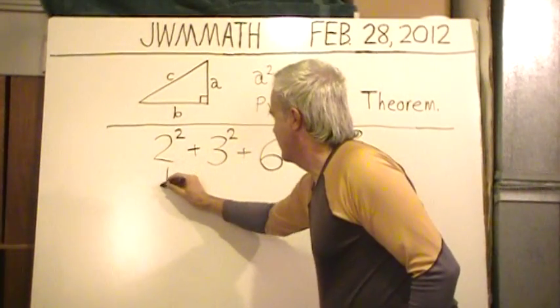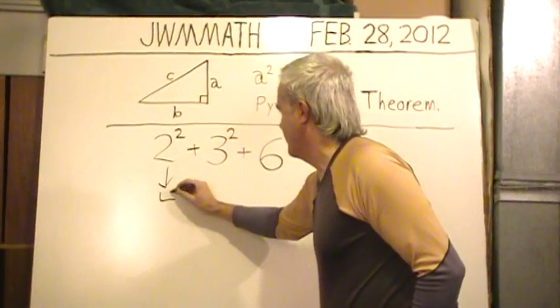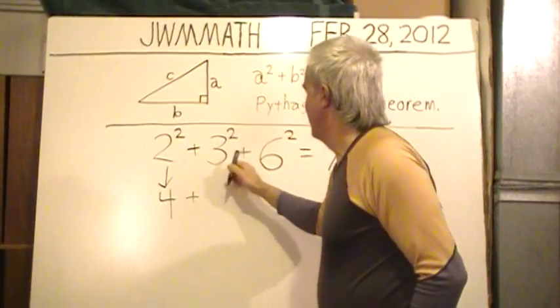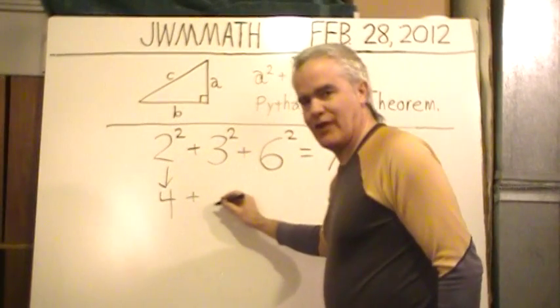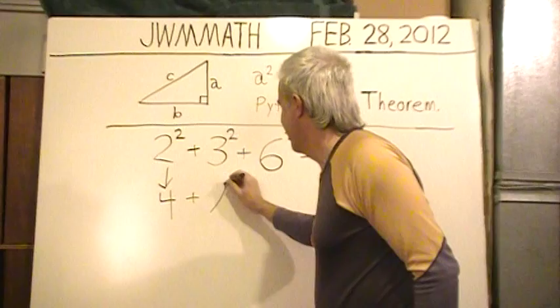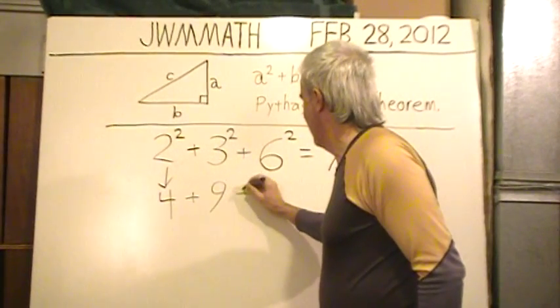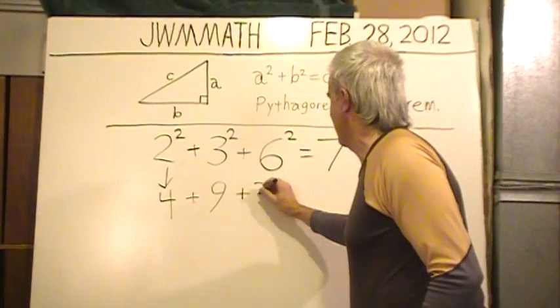Let's check that. Two squared is two times two, which is four. Three squared is just three times itself, which is nine. Six squared, six times six, which is 36.